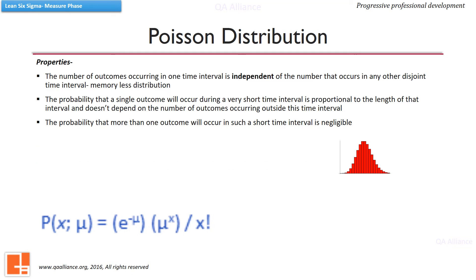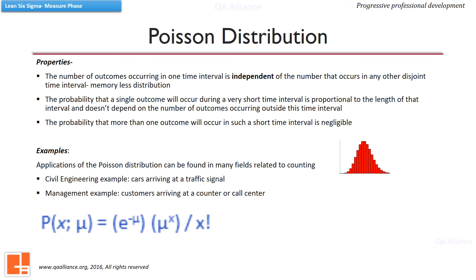Poisson distribution can be applied in many fields related to counting. For example, cars arriving at a traffic signal or customers arriving at a counter. Applying the properties: the number of cars at a traffic signal in one time interval is independent of another interval — meaning the number of cars in the morning has no influence on the evening. A single outcome's probability depends on the length of the signal interval, irrespective of outcomes outside it. Also, the probability that more than one car will arrive in a very short time interval is negligible.